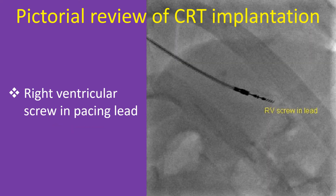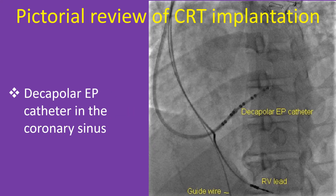Once the subclavian puncture has been obtained, the right ventricular pacing lead can be introduced and screwed into the desired location. Screw-in to the interventricular septum is often preferred to an apical location. A steerable decapolar electrophysiology catheter introduced through a sheath is useful in guiding the sheath to the coronary sinus. The decapolar catheter can be removed once the sheath has been threaded well over it into the coronary sinus and seated well.